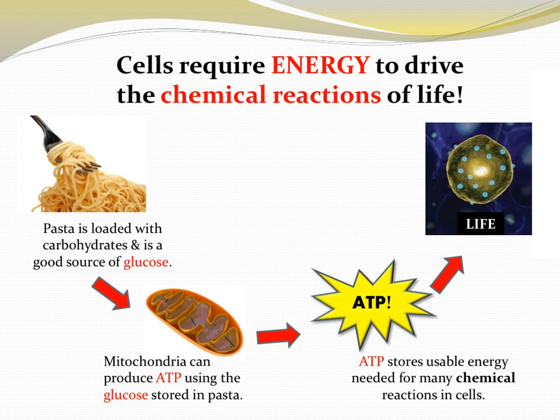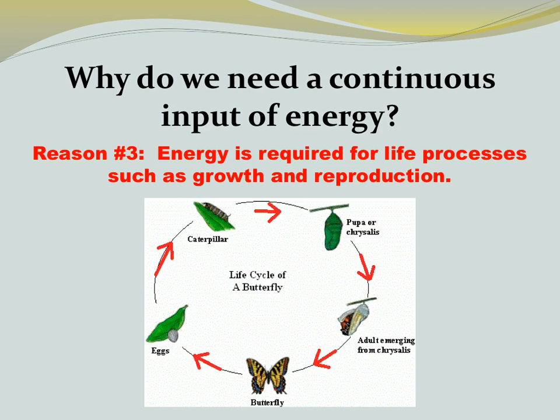Cells require energy to drive the chemical reactions of life — let's look at pasta as an example. Pasta is loaded with carbohydrates and therefore is a great source for glucose. The mitochondria in your cells use that glucose to produce the molecule ATP. ATP is an energy-storing molecule — usable energy — and that energy from ATP is used to drive the chemical reactions that keep cells alive. The third reason we need a continuous supply of energy is because energy is required for life processes such as growth and reproduction. In fact, anything that an organism does is energy-dependent.